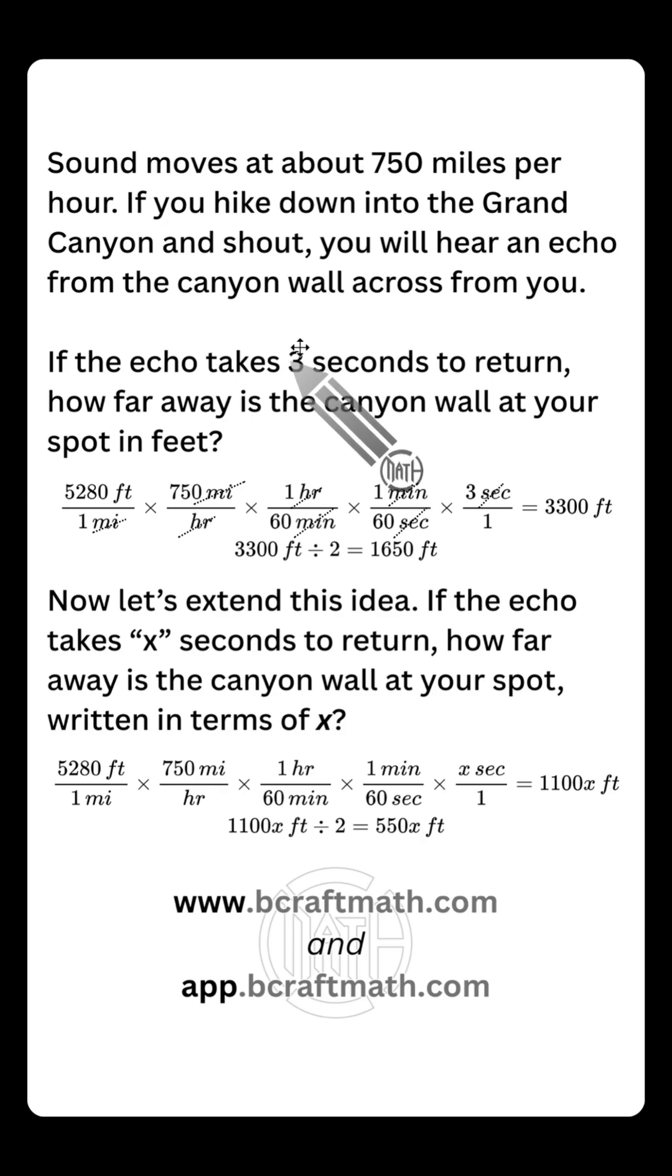So if you had 1.5 seconds, 8 seconds, 2 seconds, 4 seconds, or 7.358 seconds - instead of repeatedly changing this number out, you can just plug those number of seconds in right there. 550 times those seconds will tell you the width of the canyon from the spot you're standing at to the other side.